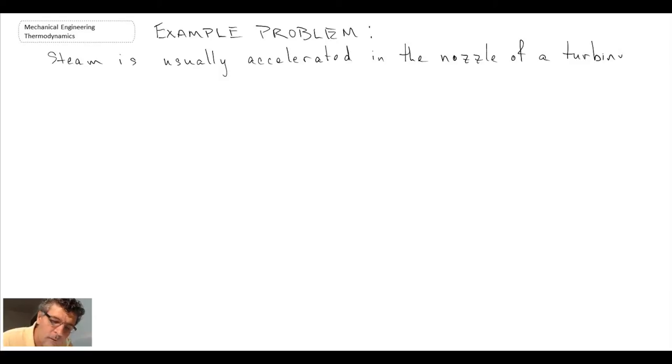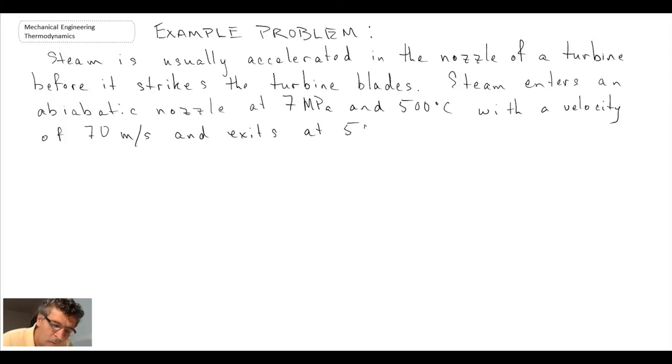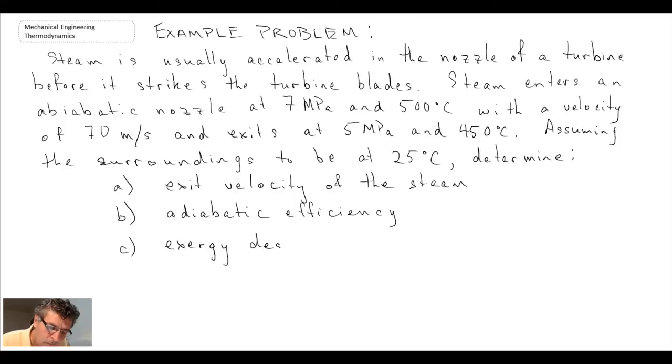So to begin with, I will write out the example problem or the problem statement. That is the problem statement we have before us, and just like any other problems, the first place we want to start is to look at the terms and try to pull out the keywords that will help us understand how to solve this. We're dealing with steam as the working fluid. It is accelerated in a nozzle, so we're talking about a nozzle of a turbine, but we're not dealing with the turbine. We're dealing with the nozzle before the turbine.